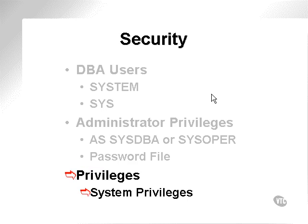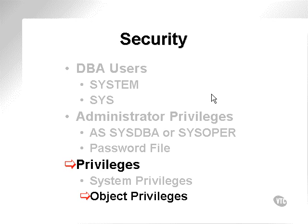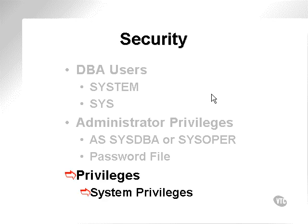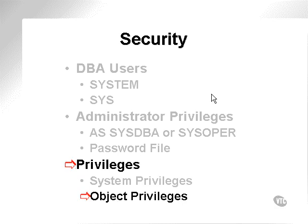Other types of privileges are system privileges and object privileges in general. A system privilege is a privilege granted to a user which allows creation or changing of database objects such as tables and indexes. An object privilege allows access to the information in those tables, such as the data rows.